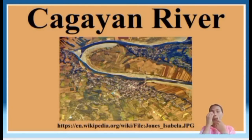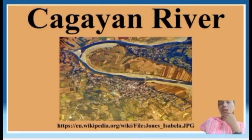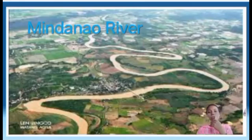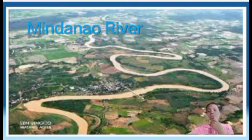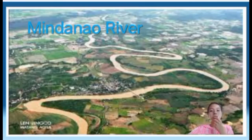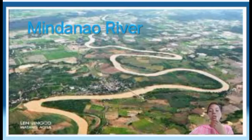The next longest river is the Mindanao River, at 232 miles. It has four major tributaries: the Ala River, Buluan River, Pulangi River, and Imlang River. Its mouth is at Ilana Bay, and it forms two distributaries, the Cotabato and Tamontaka. The river is an important transport route for the towns along its banks.